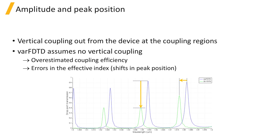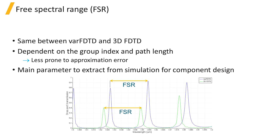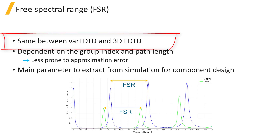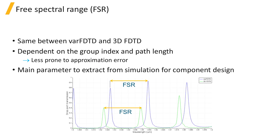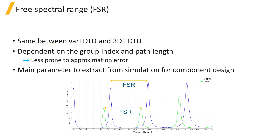Since the 3D FDTD simulation accounts for loss in the vertical direction, the peaks from the spectrum simulated using 3D FDTD have a lower amplitude. The free spectral range, or spacing between the peaks, is the same between the two methods, since this value depends on the group index and the path length of the ring, which do not suffer from approximations.